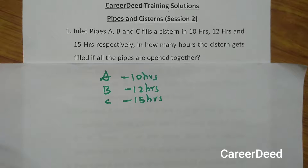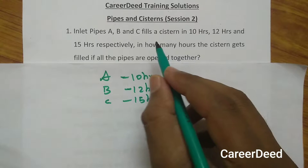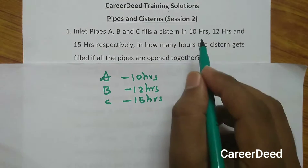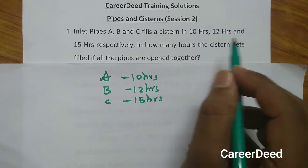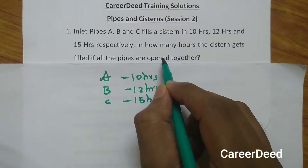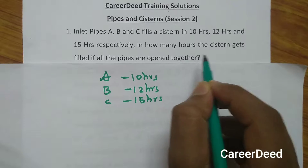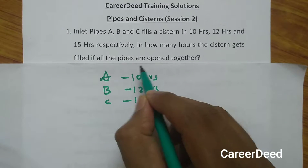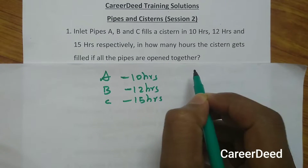Here is question number 1. Inlet pipes A, B and C fill a cistern in 10 hours, 12 hours and 15 hours respectively. In how many hours does the cistern get filled if all the pipes are opened together?